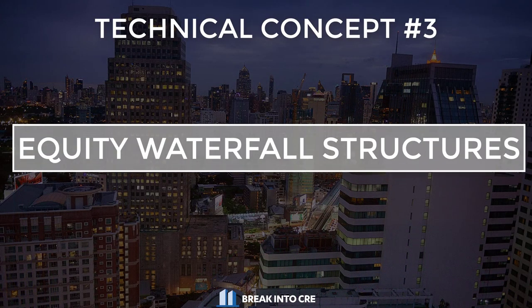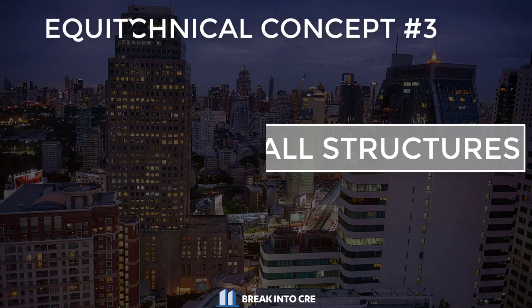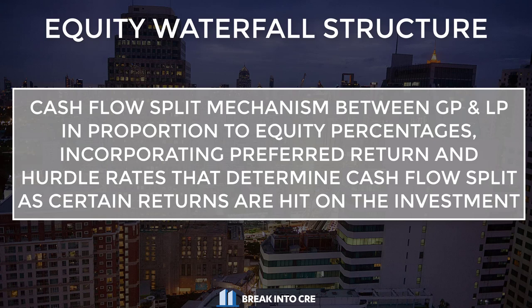Now, the final concept I'd recommend knowing is how an equity waterfall structure works. I've made a video on that in the past and I'll link that in the description below. But essentially, a waterfall structure is a cash flow split mechanism that splits cash flows to the general partner and the limited partner in proportion to their equity percentages, and incorporates certain preferred return and hurdle rates that determine that cash flow split as certain returns are hit on the investment. A question you might get on this might be something along the lines of: walk me through a waterfall structure.